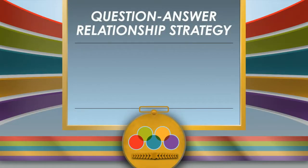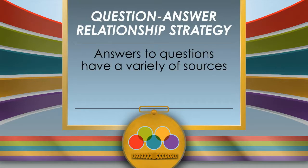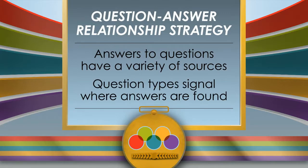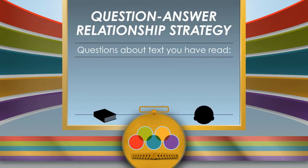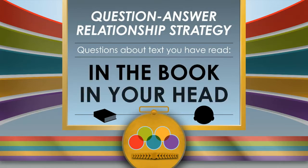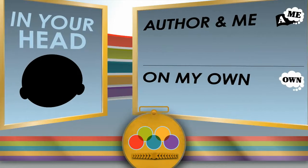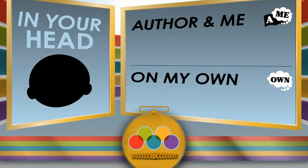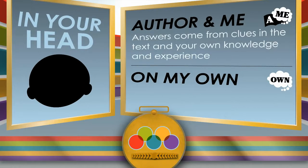Martin is getting the team into shape by helping them understand question-answer relationship strategy. The team members are learning that answers to questions have a variety of sources, and that question types signal where answers can be found. The two places to look for answers about texts you have read are in the book and in your head. There are two types of in-your-head questions. Author-and-me questions require you to pull from your own knowledge and experience, as well as clues from the author, to develop the answer.